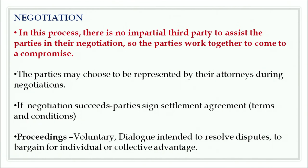The next process is negotiation. In this process, there is no impartial third party required — the parties are free to work together to come to a compromise. The parties, if they wish, may choose to be represented by their attorney during negotiation. If the negotiation succeeds, the parties can sign a settlement agreement on the agreed terms and conditions, which will then be binding on both parties. The proceedings are absolutely voluntary — more like a dialogue between the parties intended to resolve the dispute, where parties bargain with each other for individual or collective advantage.